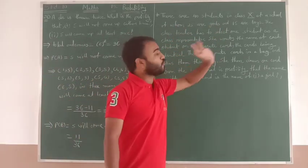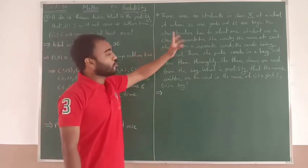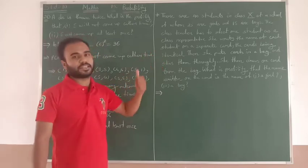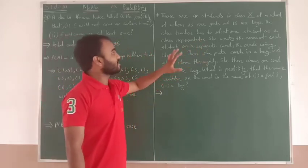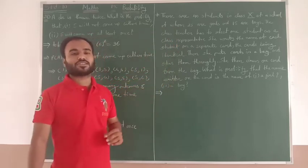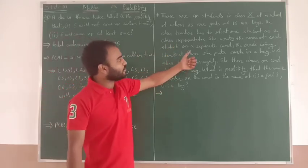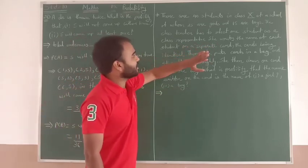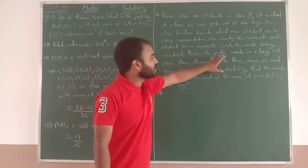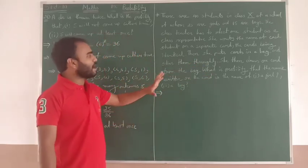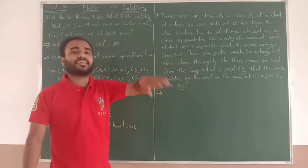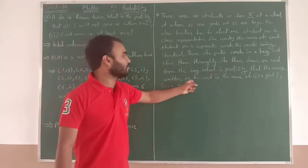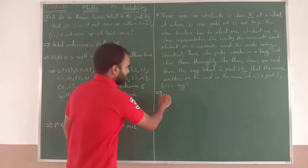Now we will move forward to another example. There are 40 students in class 10 of school, of whom 25 are girls and 15 are boys. The class teacher has to select one student as a class representative, means class monitor. She writes the name of each student, all 40 students, that is 25 girls and 15 boys, on a separate card. The cards being identical, she puts cards in a big bag and stirs them thoroughly, mixes them well, then no one can appropriately take out the selected name.